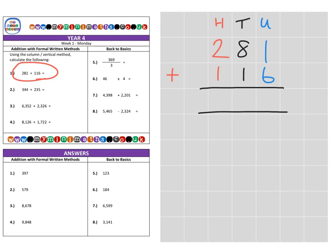First of all, if we look at the hundreds column and look at our number closely, we have 200 here and 100 underneath. Then if we look at our tens column, there's an 80 and a 10. And then finally, if we look at the units, we have a single unit and then six units.